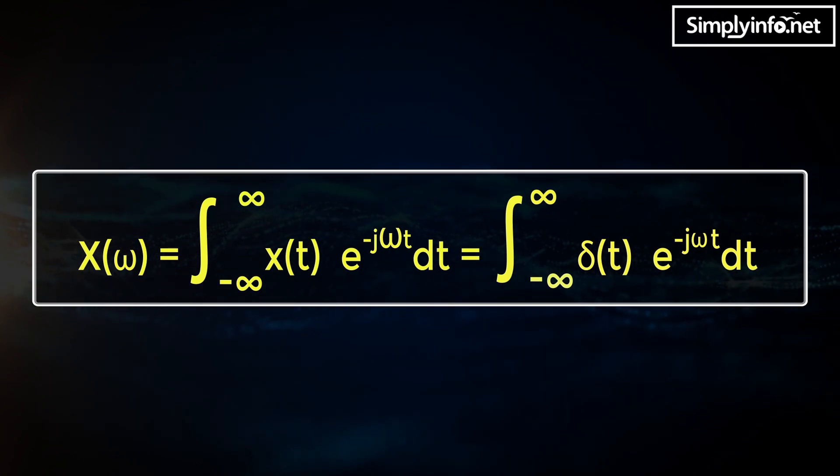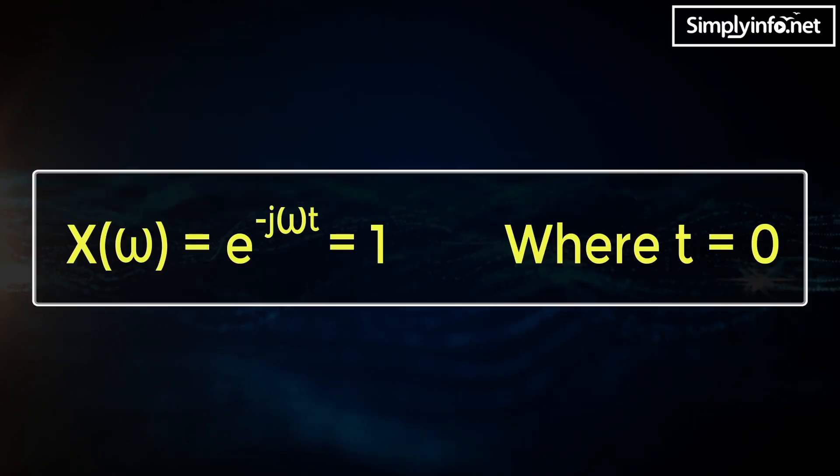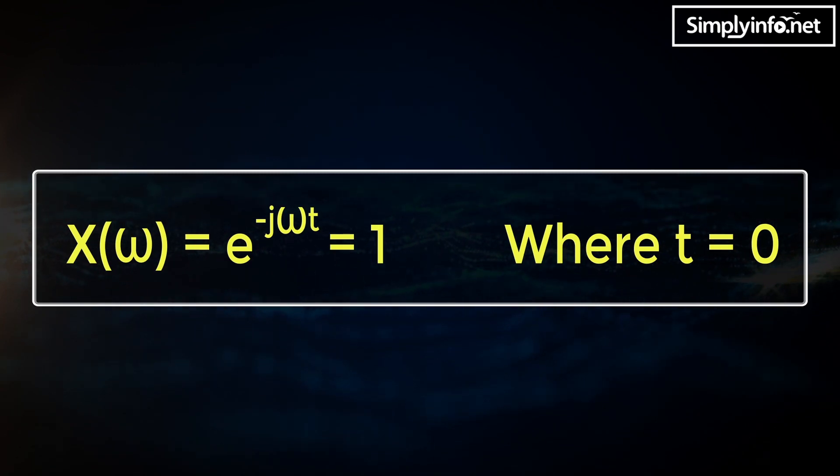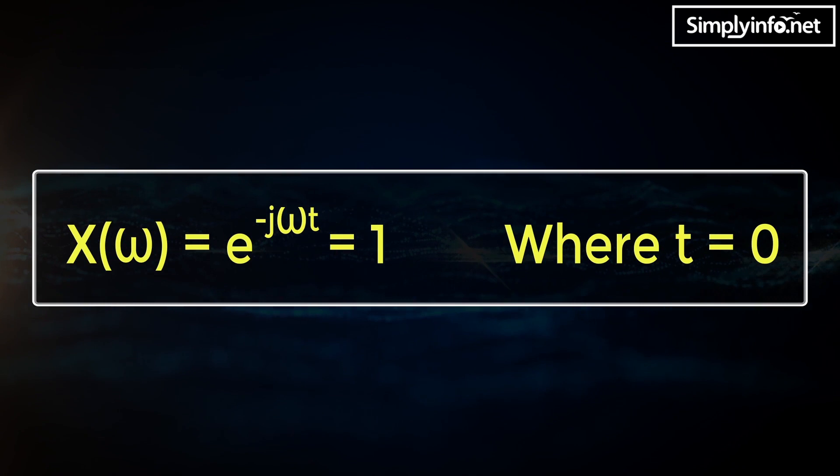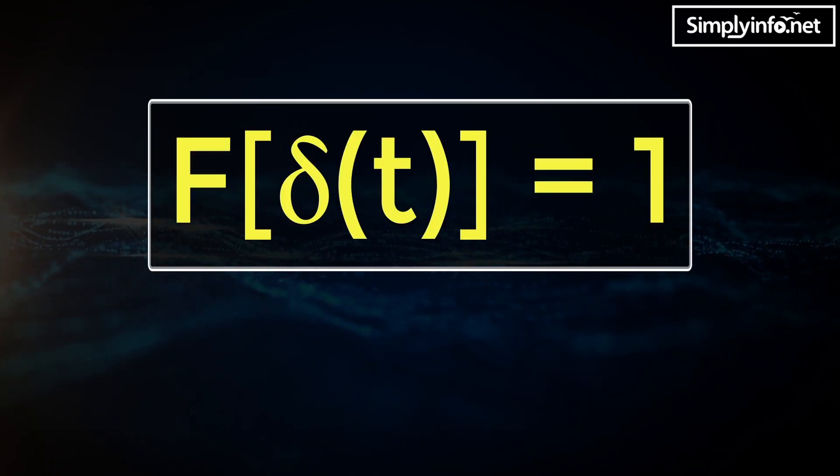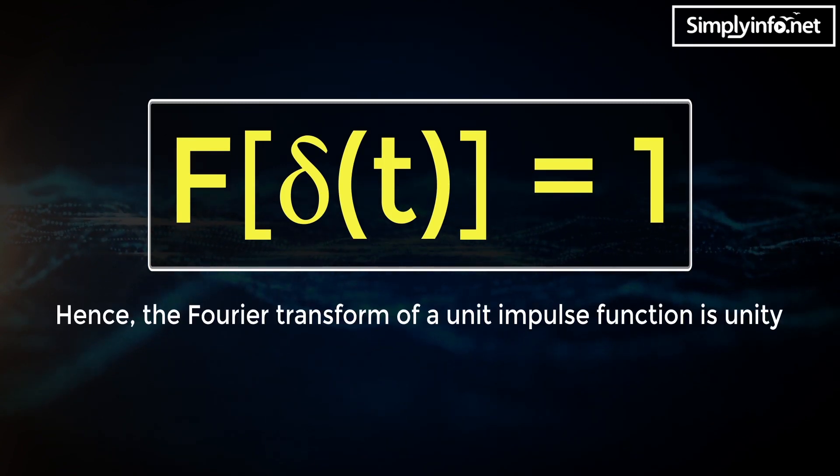x of omega equals exponential of minus j omega t equals 1 where t equals 0. Therefore, the Fourier transform of delta of t equals 1. Hence, the Fourier transform of a unit impulse function is unity.